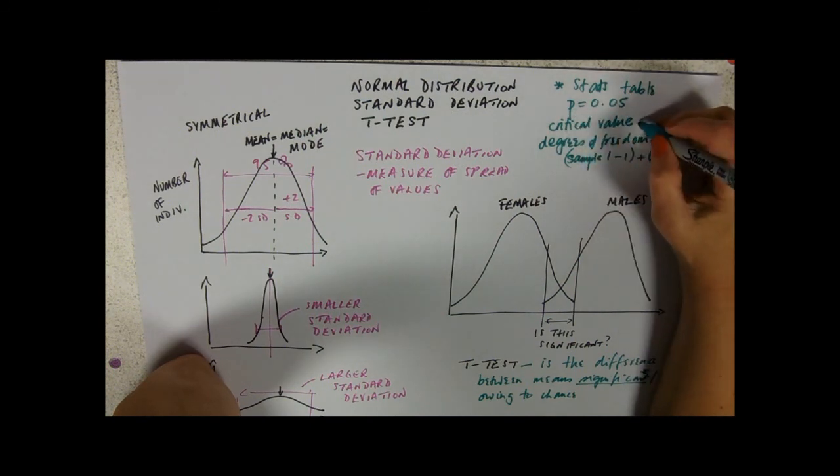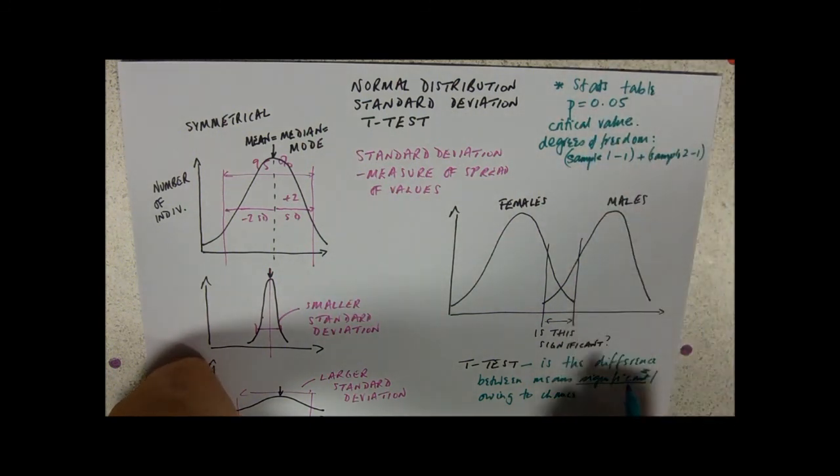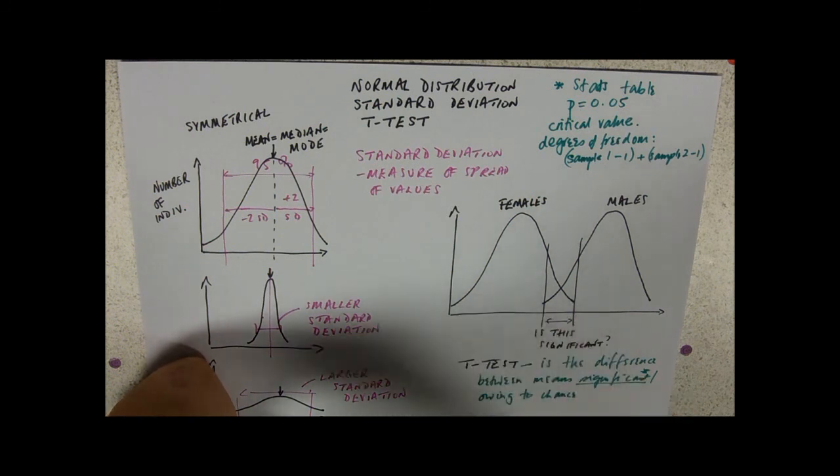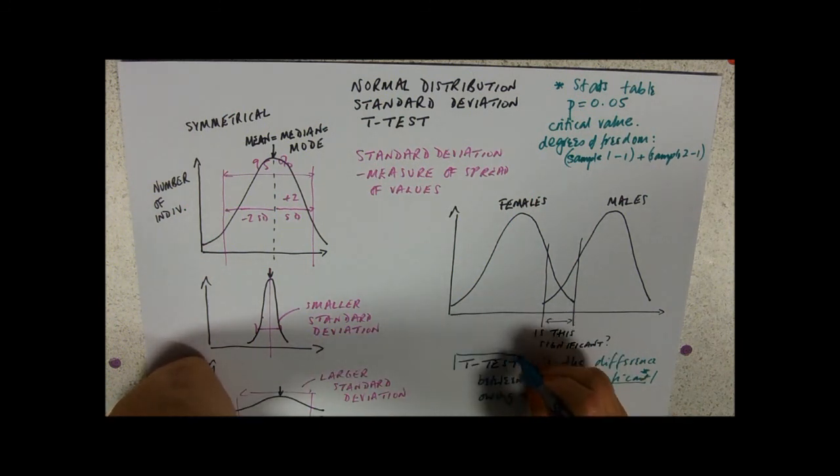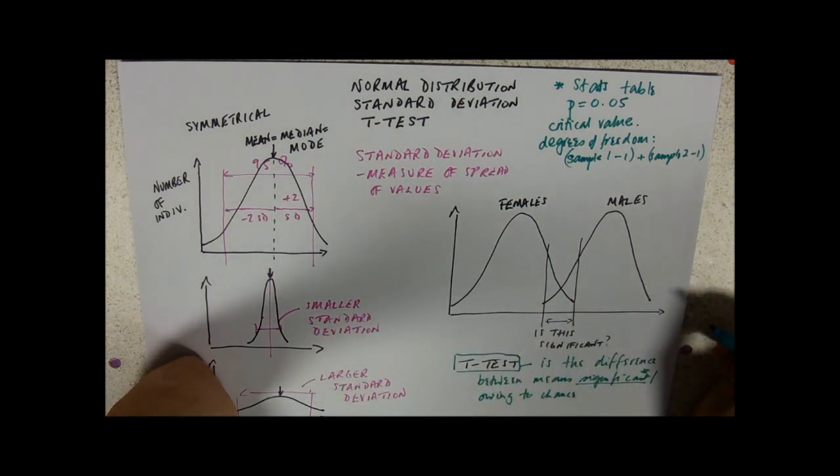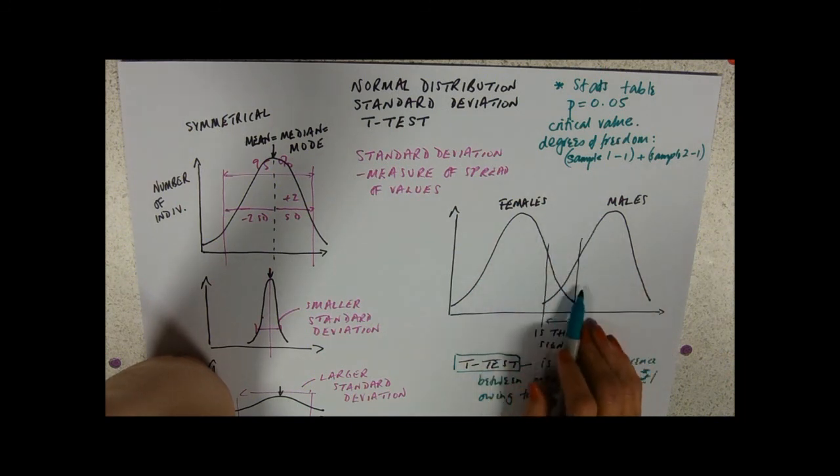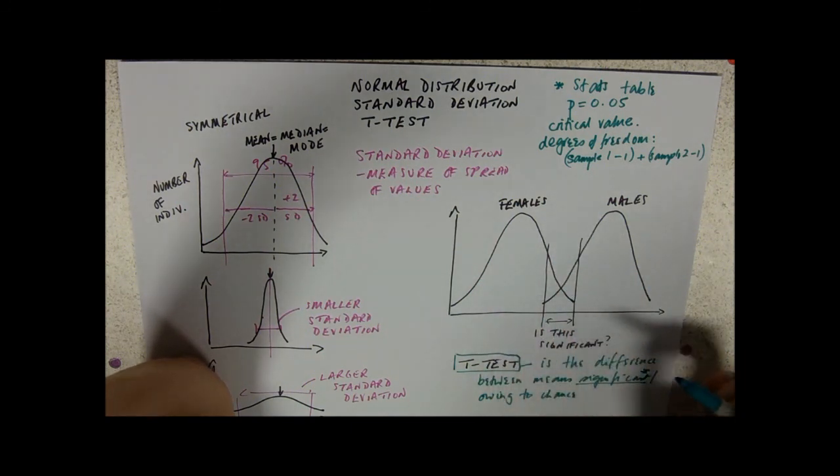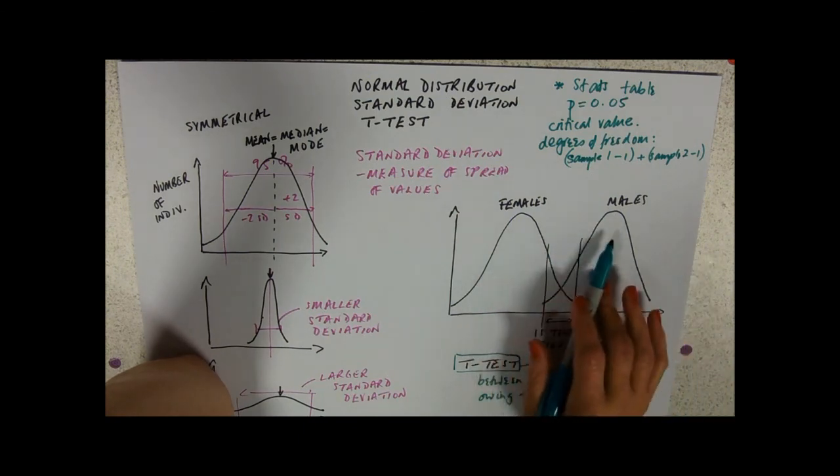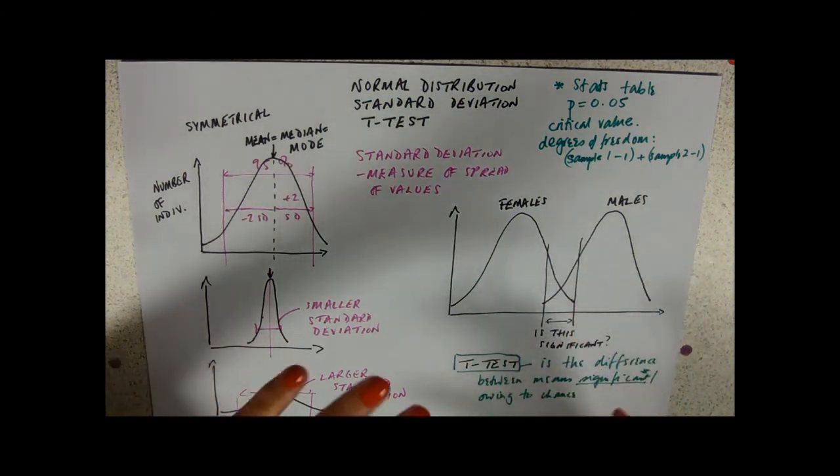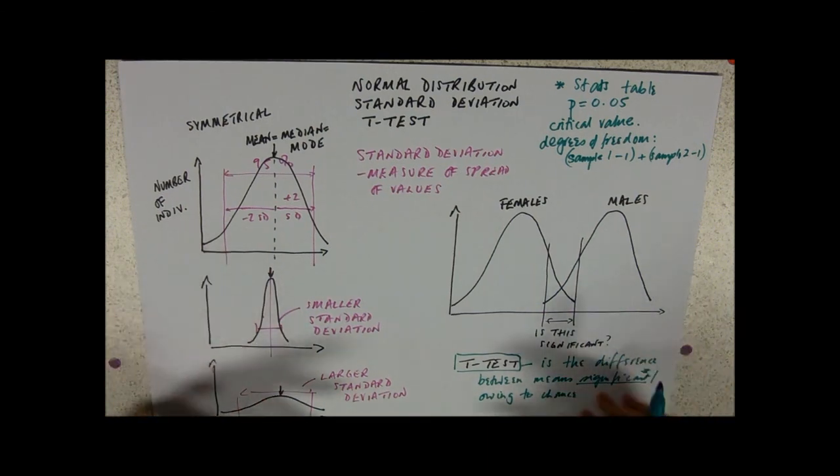Then you read your critical value off your table. If your t-score is bigger, then you're going to reject the null hypothesis and say yeah, these peaks are really far apart, that overlap's not significant, that's down to chance. If your t-score is less than the critical value, you're going to say there isn't a difference between these two peaks. You're using it to compare two populations to see if any differences are significant, and that's quite key if we're looking at morphological features.